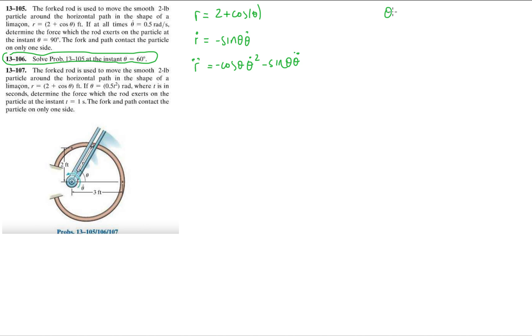And then we also had, we're given now that theta is 60 degrees, also known as pi over 3. Theta dot stays at 0.5 radians per second, and then theta double dot is 0.